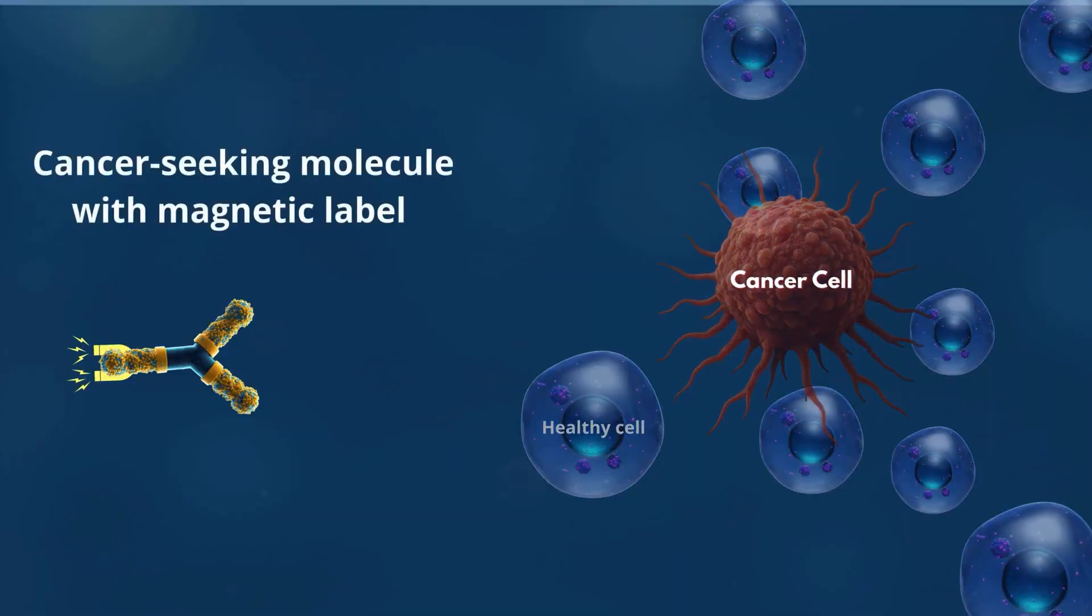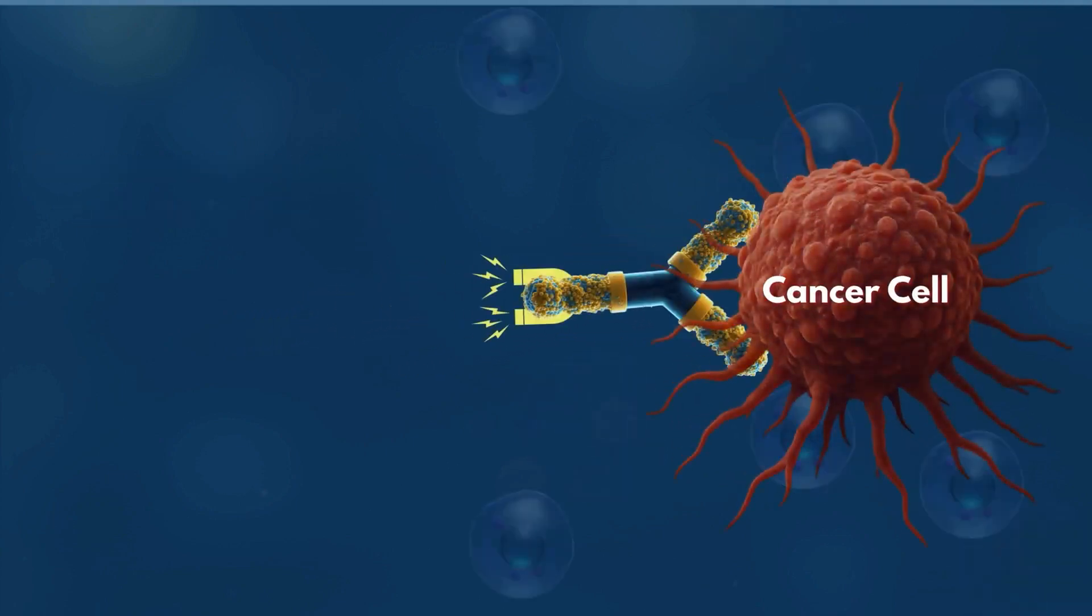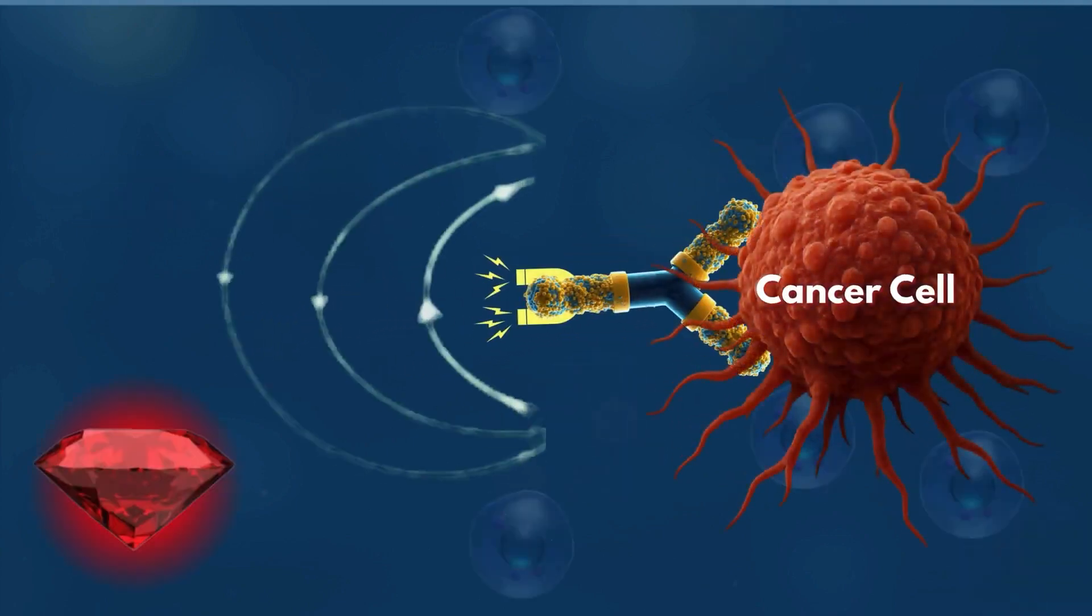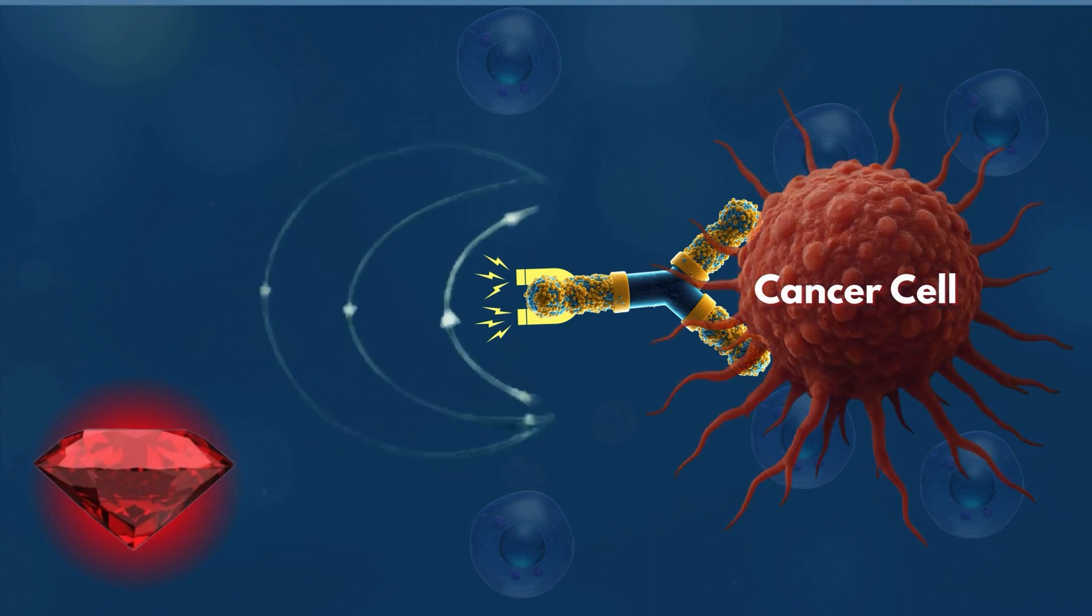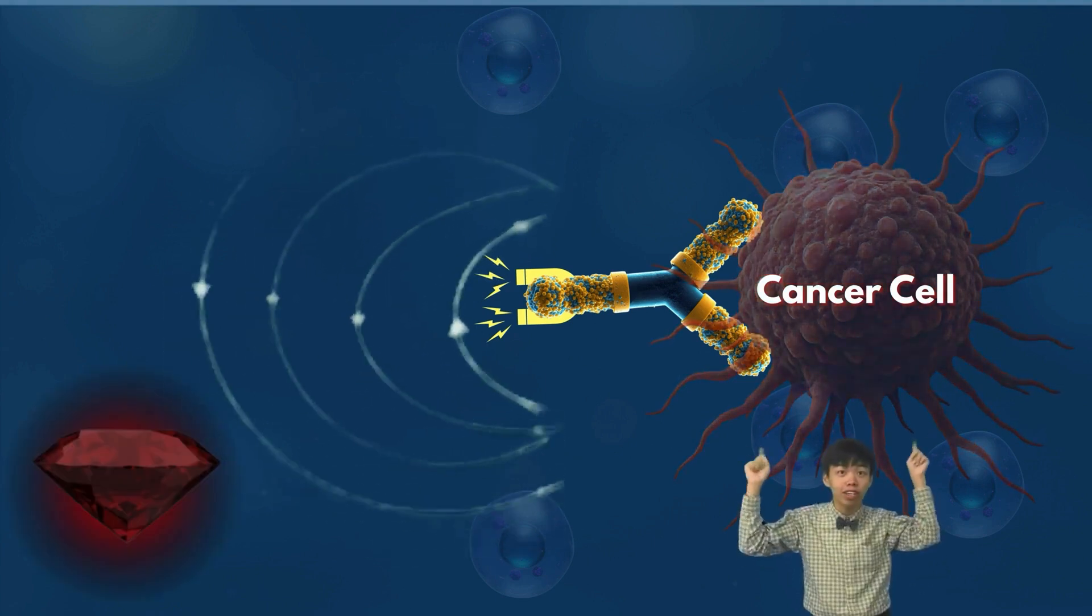Scientists use cancer-seeking molecules armed with tiny magnetic labels. When these molecules attach exclusively to a cancer cell, they create a distinct magnetic field right at the target. The NV Center then senses the signal, causing its red glow to dim - an alarm whispering cancer found here.